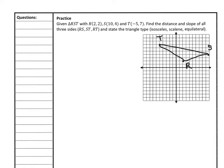For our last example, we're given a triangle again with coordinates and it says find the distance and slope of all three sides — RS, ST, and RT — and state the type of triangle. If it's an isosceles triangle, we'll end up with two congruent sides. If it's scalene, no sides are congruent. If it's equilateral, all three sides are congruent. This will be evident through our distance column.